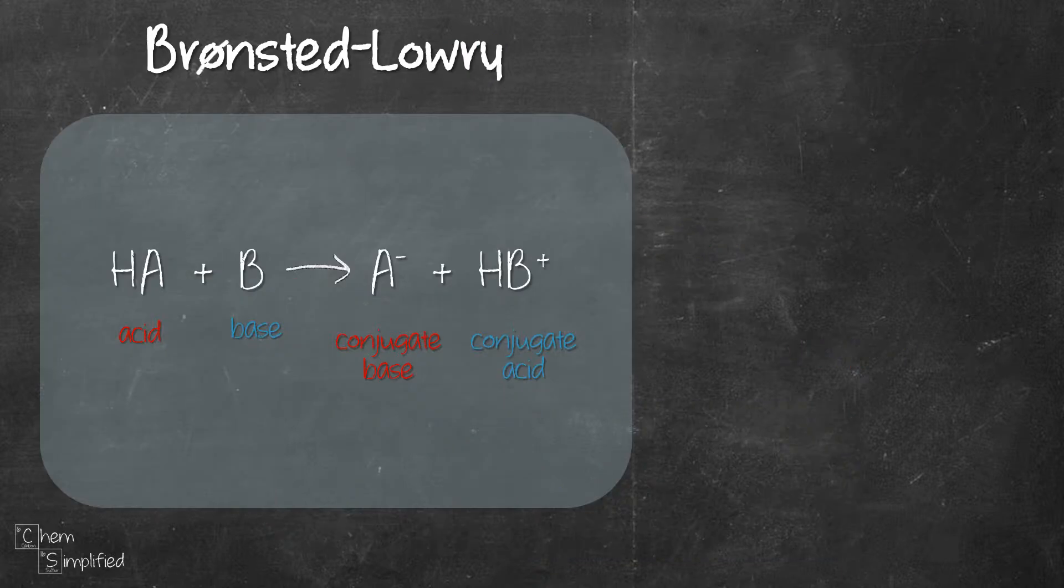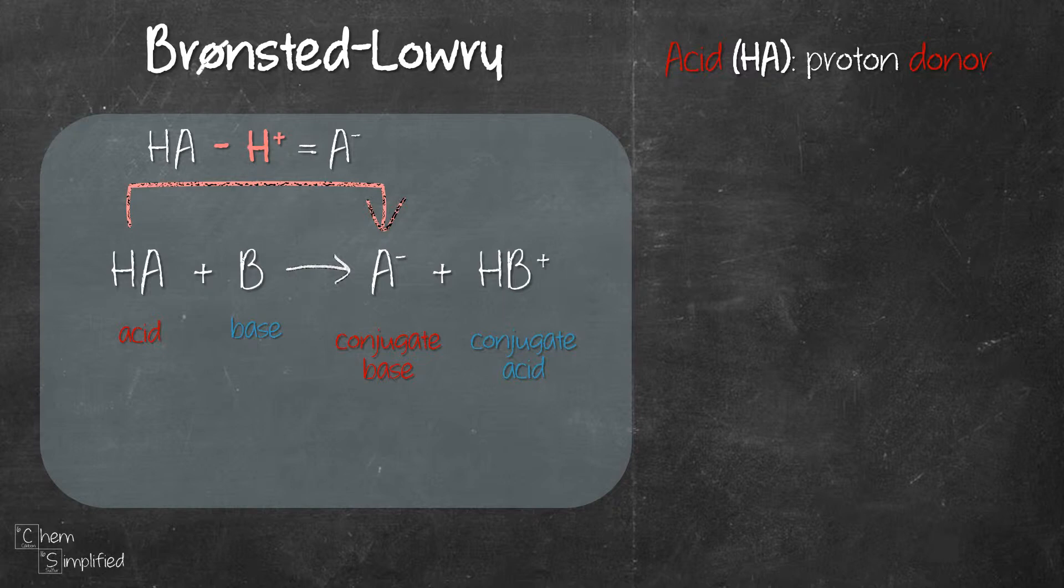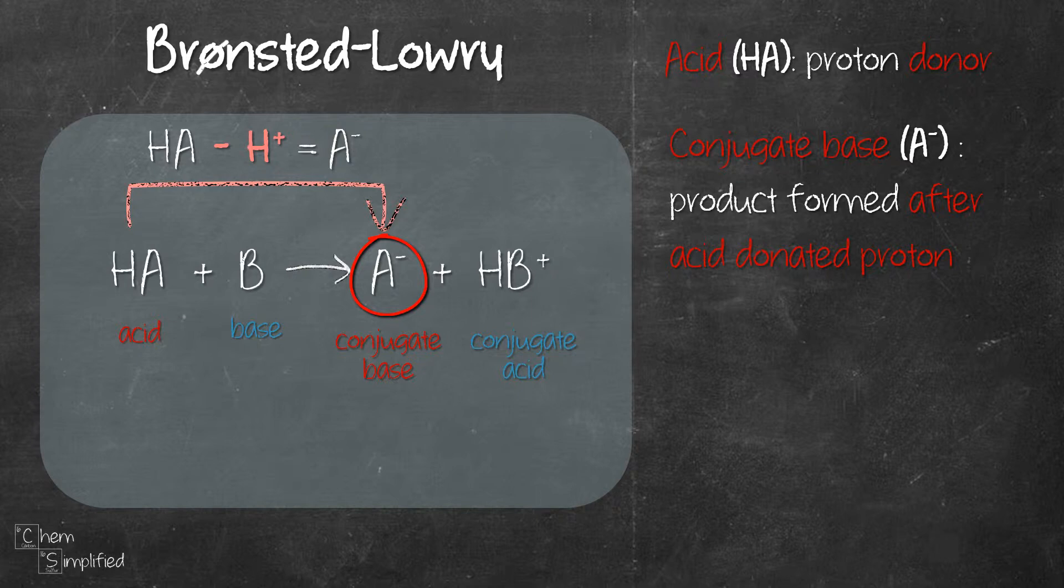The reason HA is an acid is because it donates H plus to B and it becomes A minus. Once acid fulfills its duty by donating proton, the product A minus is called the conjugate base. Therefore, HA and A minus is called the acid and conjugate base pair.